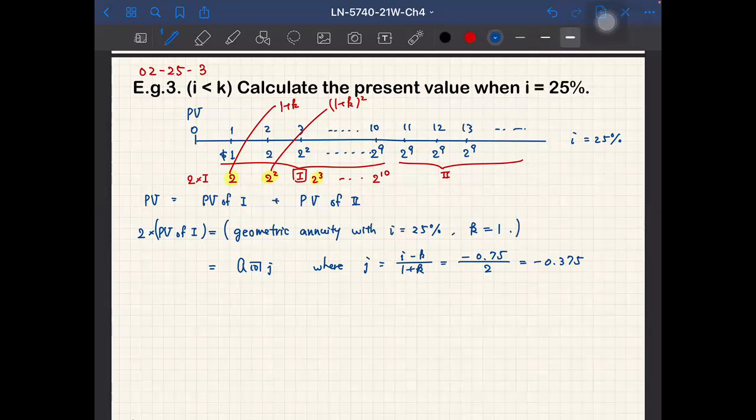So it's a little bit strange because usually K is smaller than i in the previous example, but here K is larger than i. So J is a negative interest, but it does not cause any problem.